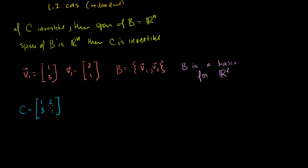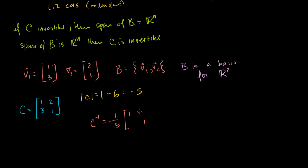To find C inverse, we calculate the determinant of C: 1 times 1 minus 2 times 3 equals negative 5. Using the 2×2 inverse formula, C inverse equals 1 over negative 5 times the matrix [[1, -2], [-3, 1]]. The non-zero determinant confirms C is invertible.